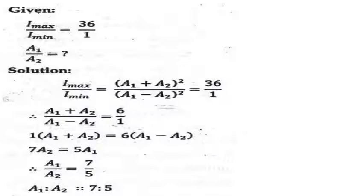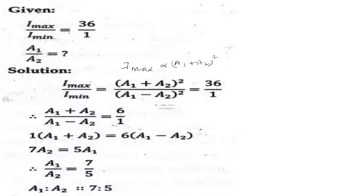The maximum intensity is proportional to (a1 plus a2) whole square, and the minimum intensity is equal to (a1 minus a2) whole square.